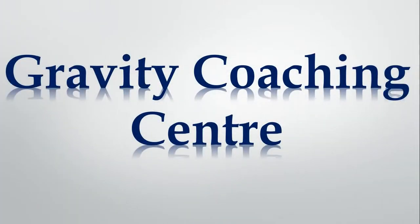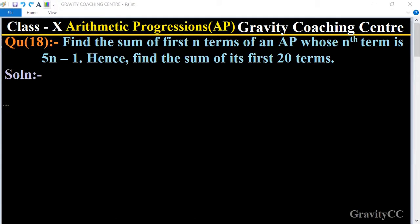Welcome to our channel Gravity Coaching Centre, Class 10, Chapter Arithmetic Progressions, Question Number 18. Find the sum of first n terms of an AP whose nth term is given 5n minus 1. Hence, find the sum of its first 20 terms.